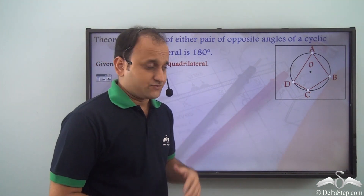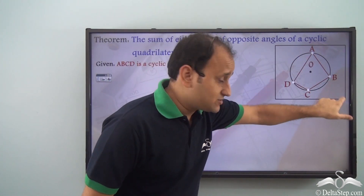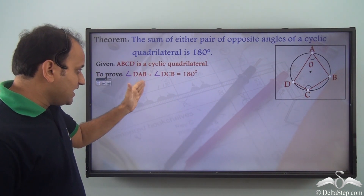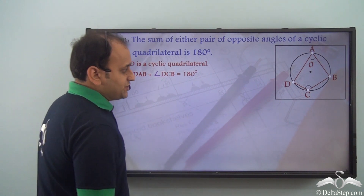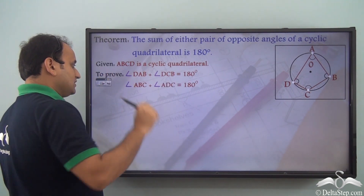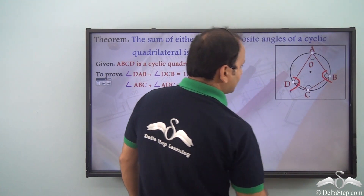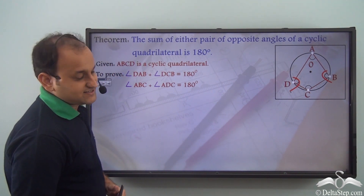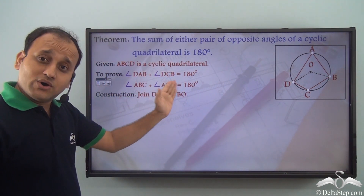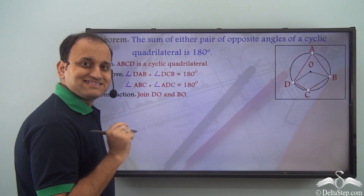If we need to prove this, first of all, what do we have as given? ABCD is a cyclic quadrilateral — all the vertices lie on a circle. We need to prove that angle DAB plus angle DCB is equal to 180 degrees, and similarly, angle ABC plus angle ADC will also be 180 degrees. The construction is: join DO and BO, where O is the centre of the circle.